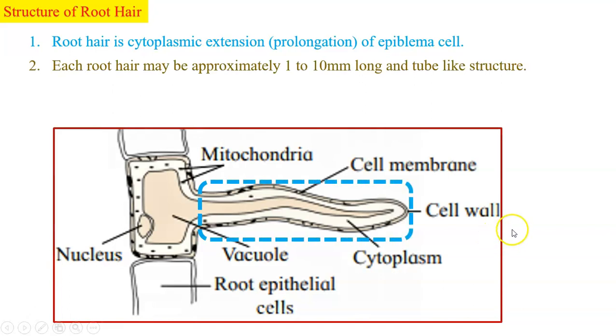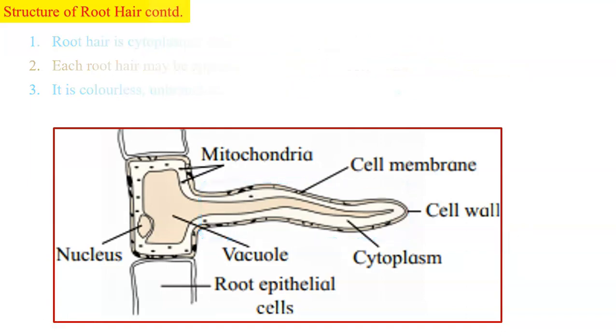Each root hair may be approximately 1 to 10 millimeter long and it is a tube-like structure. It is colorless, unbranched and is ephemeral or short-lived and is very delicate.